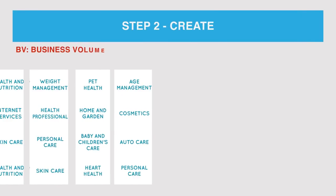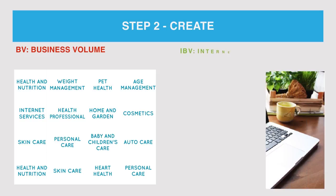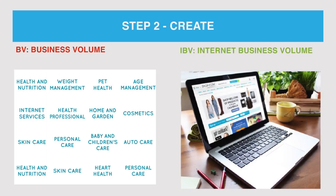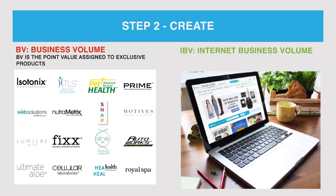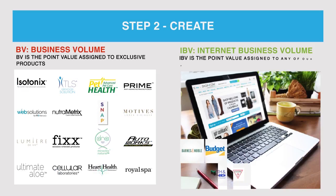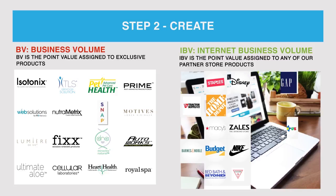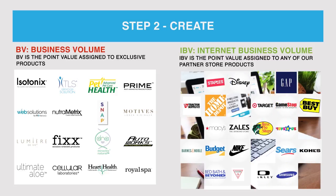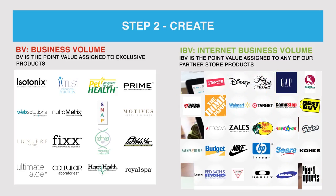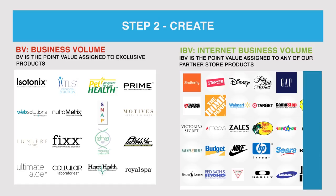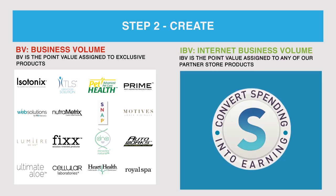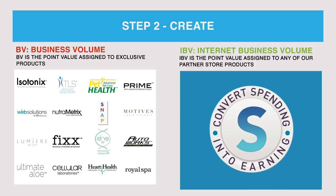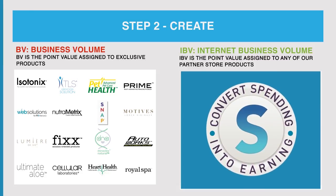Step 2: Create. The second step is to create Business Volume (BV) and Internet Business Volume (IBV). Business Volume is the unit value or points assigned to the company's exclusive products. Internet Business Volume is the unit value or points assigned to any of our partner store products. By purchasing the company's exclusive products and from the partner stores that you already shop from, you can convert your spending into earning and build your shopping annuity. BV and IBV are used to calculate commissions.